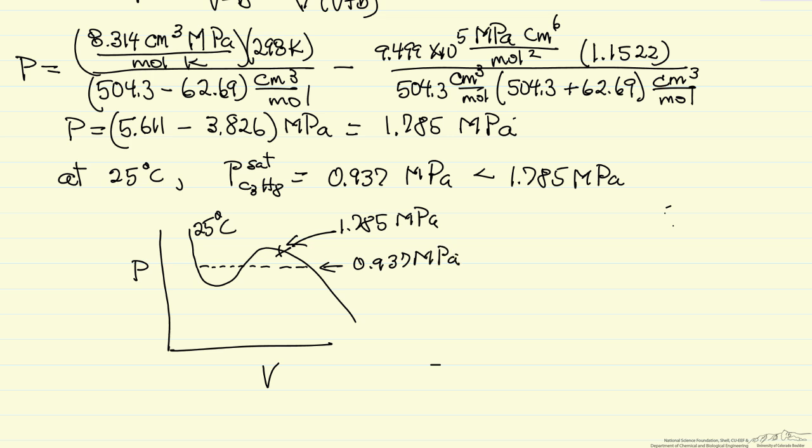So we calculate a value, but it doesn't correspond to a physically meaningful value. Remember, this region and this region do not correspond to physically meaningful values, and instead, we have vapor-liquid equilibrium. And so the equation and the curve that we want is that one. And so we've calculated a value that's not on this curve, and instead, at this volume, we're going to be here, so we're going to have a vapor-liquid mixture in equilibrium.